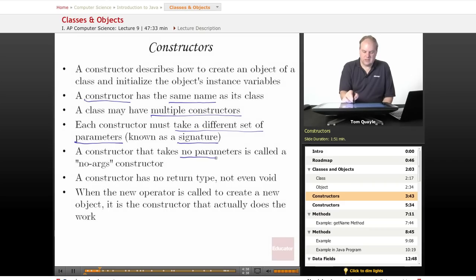A constructor that takes no parameters—that you just call it with the name of the constructor, open parenthesis and close parenthesis with nothing in between—is called a no-args constructor. Args being short for arguments; it takes no arguments or no parameters. A constructor also has no return type, not even void.